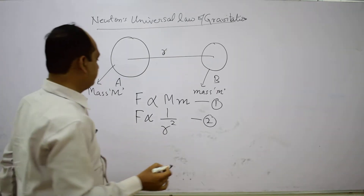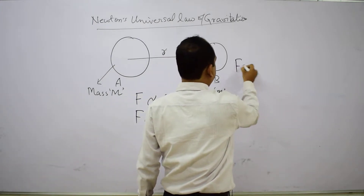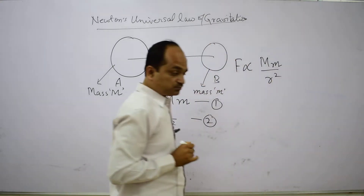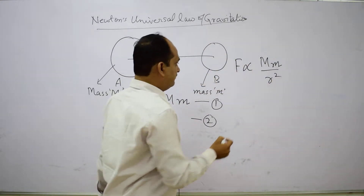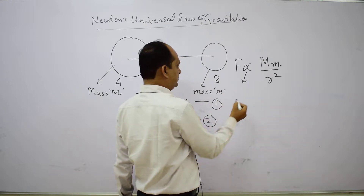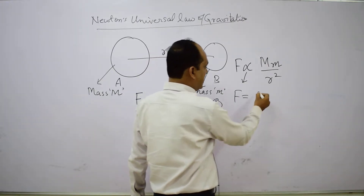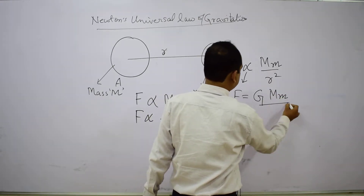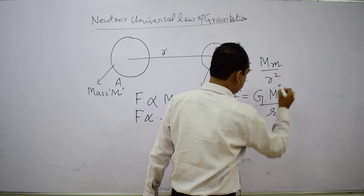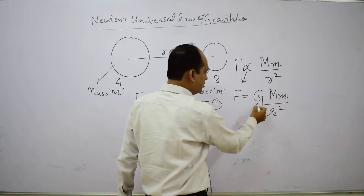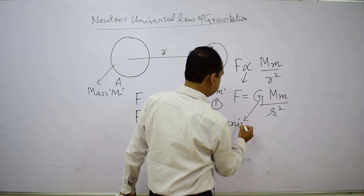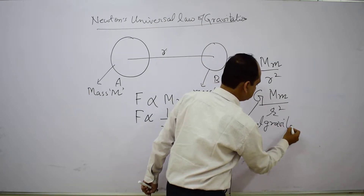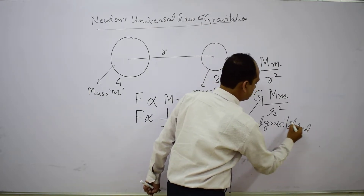Combining both proportionalities, we can write F is proportional to capital M times small m upon R square. When we remove the proportionality sign and convert to an equation, we introduce a constant, giving F equals G M m divided by R square. This constant G is known as the universal gravitational constant.